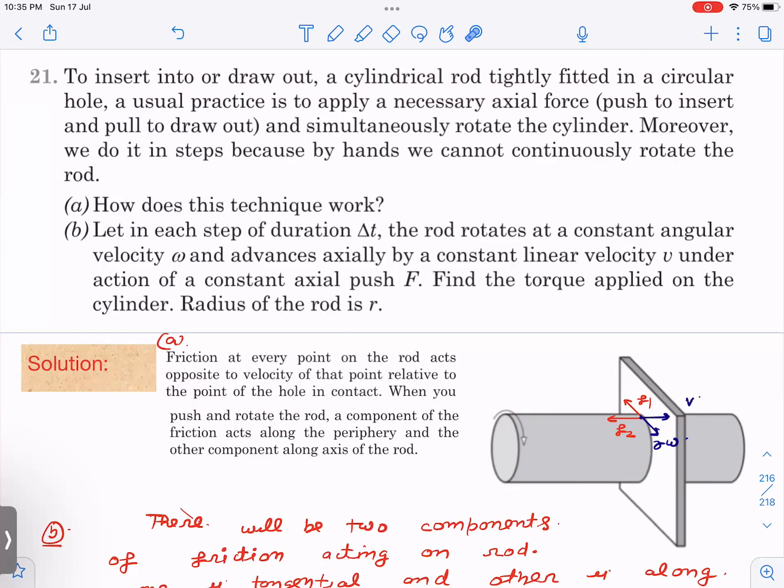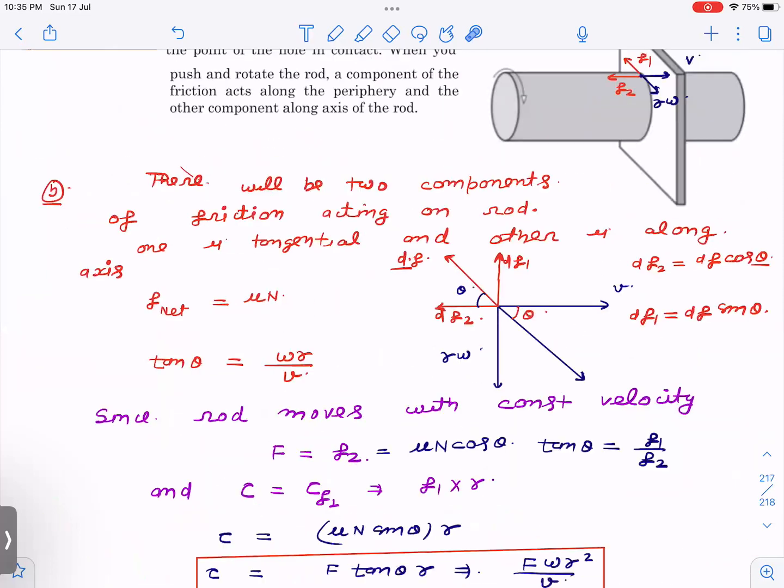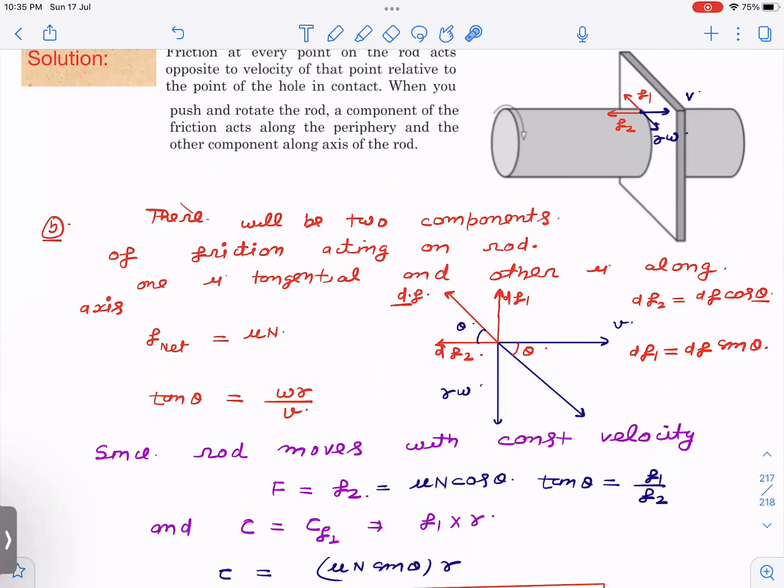Now the second part, let us do the second one. The torque applied on the cylinder we have to find out. The cylinder is moving with constant velocity v and rotating with constant angular velocity omega. So let us see just one simple diagram and then we can solve this part also.